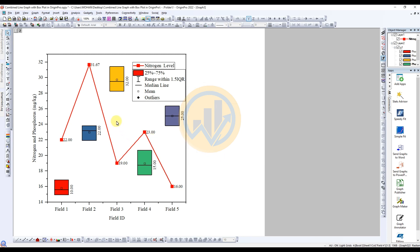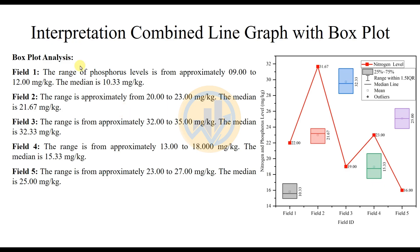This is the creating method for the combined line graph with the box plot in OriginPro software. Next, we move to the interpretation section for the combined line graph with the box plot. First, we analyze the box plot interpretation, then the line graph, and finally the combined interpretation.